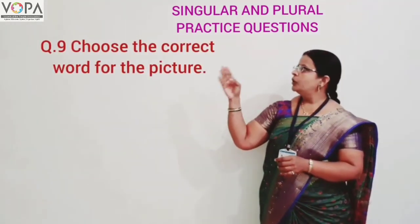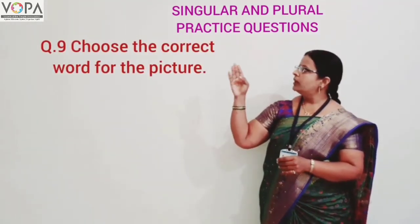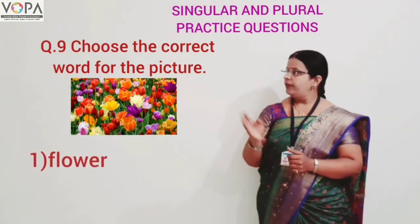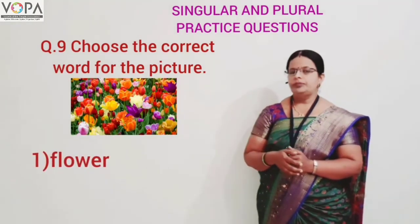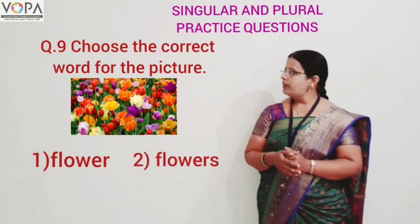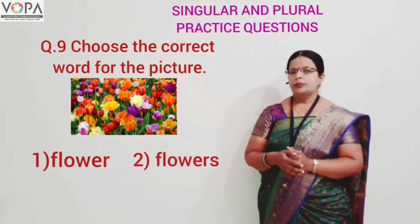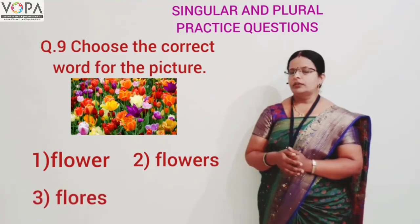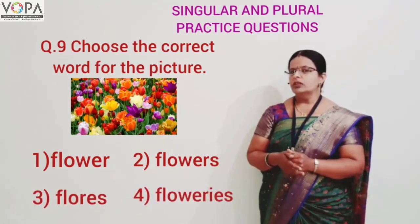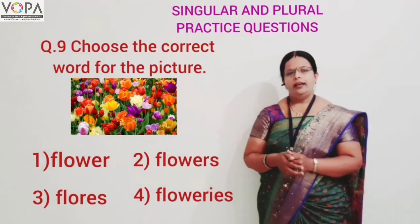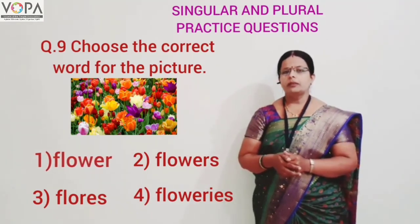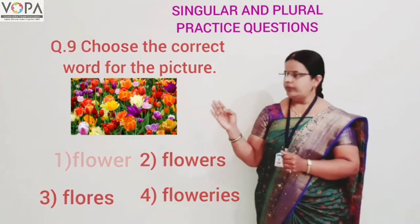Question number nine: choose the correct word for the given picture. Option one: flowers. Option two: flowers. Option three: flowers. And option four: flowers. The correct answer is option number two — flowers.